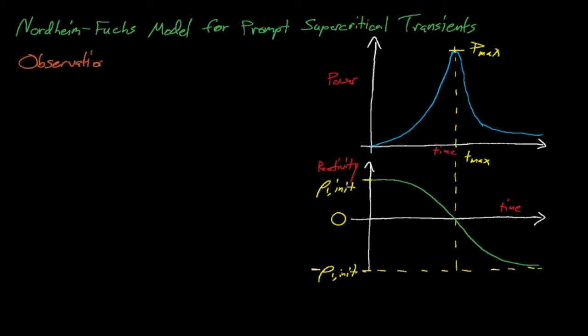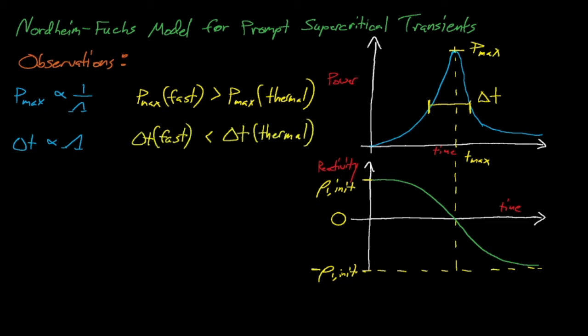The Nordheim-Fuchs model shows us that the peak power for this transient is inversely proportional to lambda, which again is the prompt neutron generation time. Lambda is several orders of magnitude smaller for fast systems than for thermal systems, which means that prompt supercritical transients in fast systems produce much higher peak powers. On the other hand, the length of the transient, delta T, is directly proportional to lambda, which means that thermal systems have much longer prompt supercritical transients than fast systems.